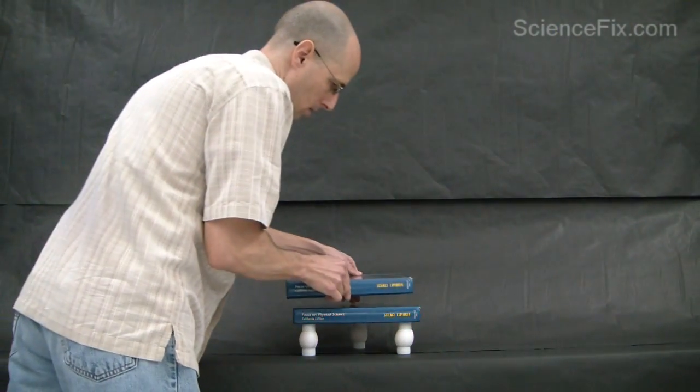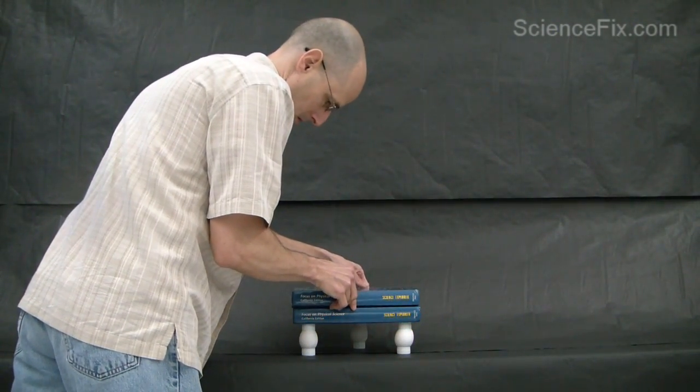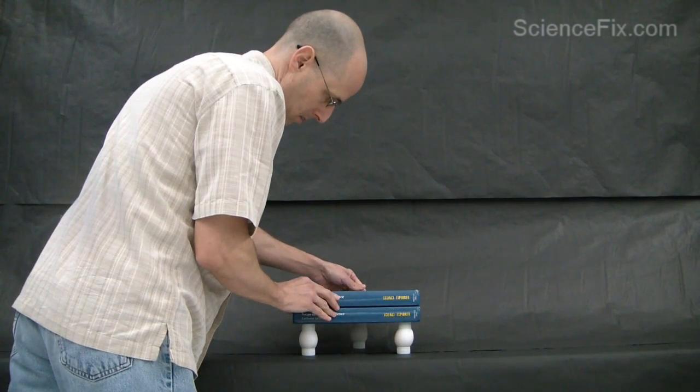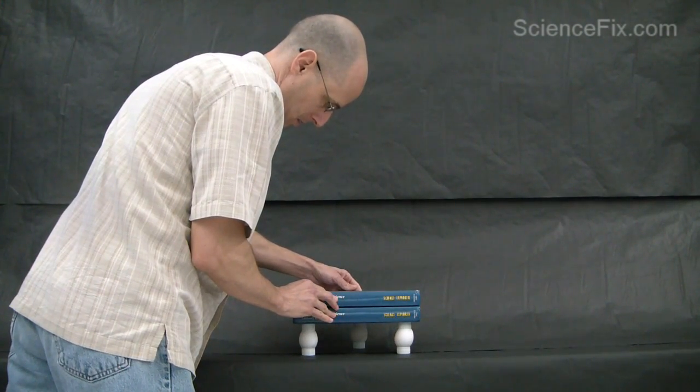So we're going to start off with one book, one pound of weight compressing the eggs. Then we're going to go to two, and now we're going to speed it up four times playback rate.